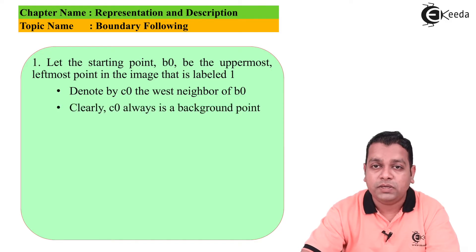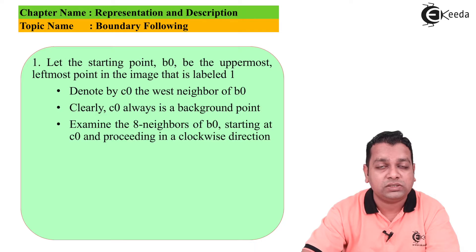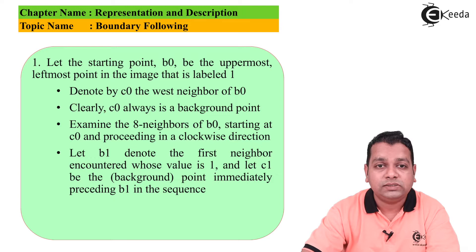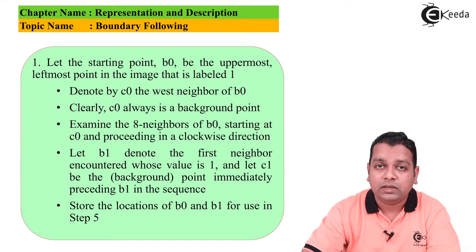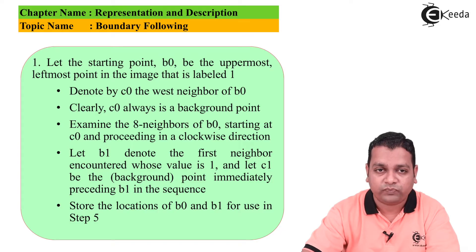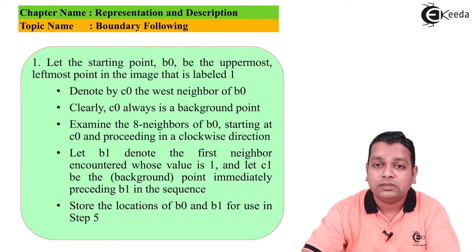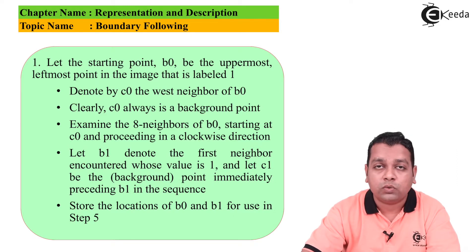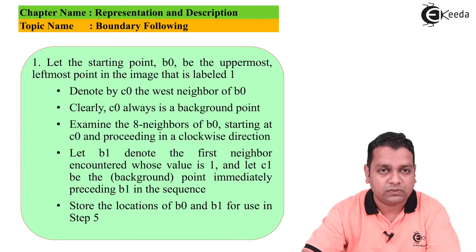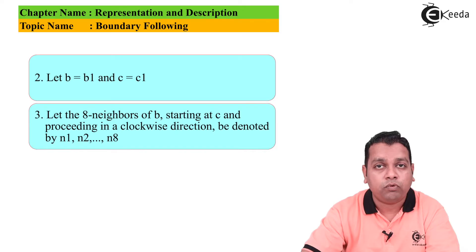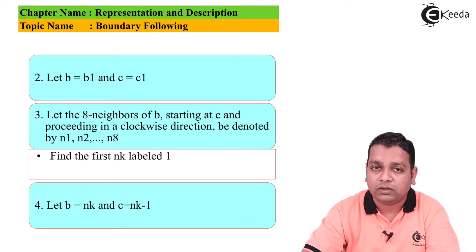Step 1: Let the starting point b₀ be the uppermost leftmost point in the image labeled as 1. Denote by c₀ the west neighbor of b₀; this c₀ is always a background point. Examining the eight neighbors of b₀ starting at c₀ and proceeding clockwise, let b₁ denote the first neighbor encountered whose value equals 1, and let c₁ be the background point immediately preceding b₁ in the sequence. Store the locations of b₀ and b₁ for use in step 5.